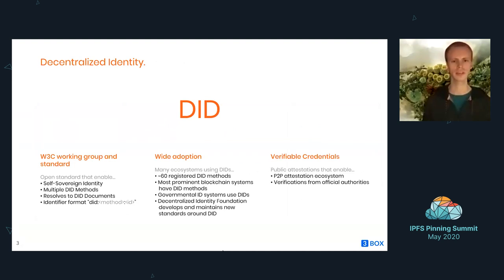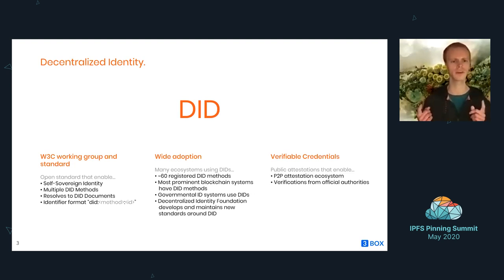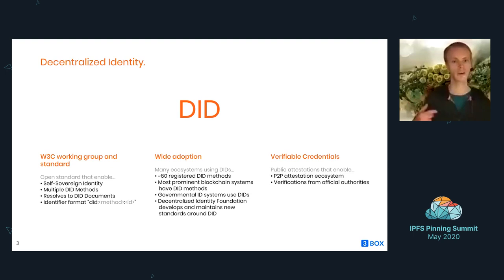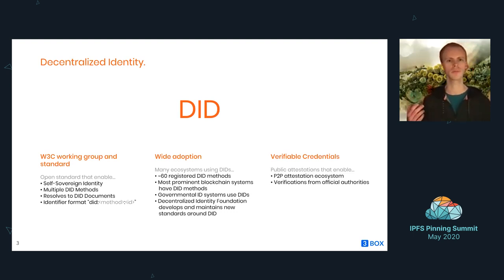What's decentralized identity? DID is the standard that emerged from a W3C working group, and it's basically a standard for self-sovereign identity. A DID is a string identifier — usually 'did:' followed by the DID method and then some string that uniquely identifies the DID. You can use this DID identifier string to resolve a DID document, which contains public keys like a signature key and a public encryption key. So you can verify signatures from that identity and do a key exchange with the identity to send encrypted messages.